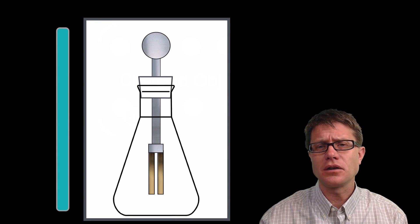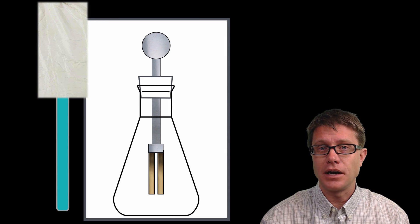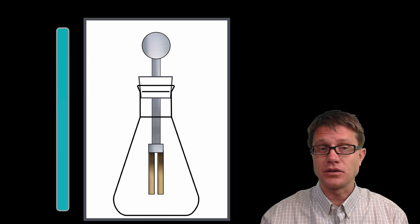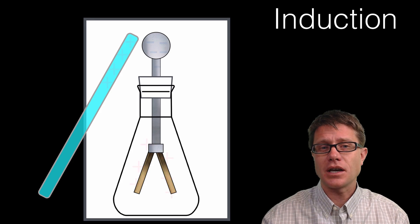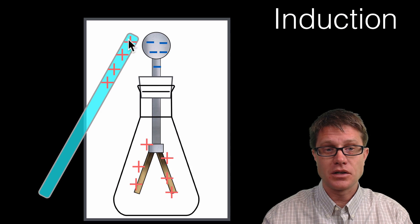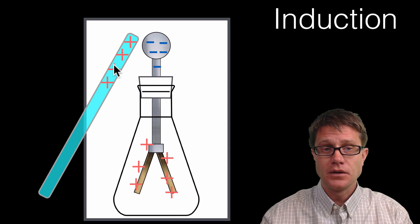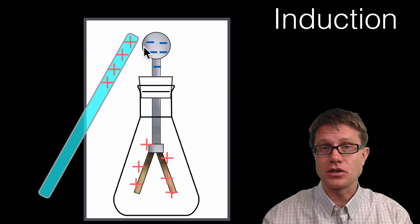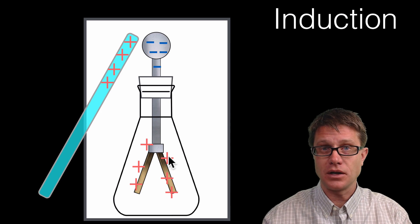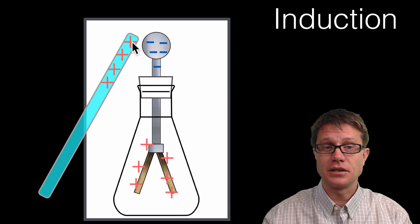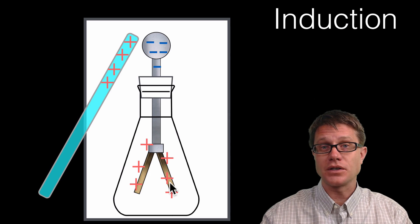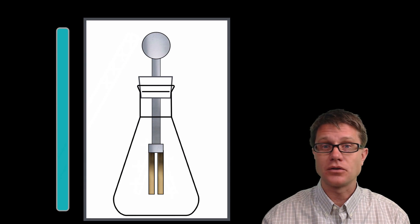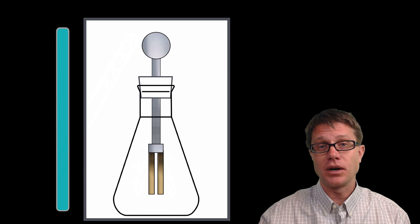Let's go back to the electroscope and understand what is going on at the charge level. I charged a glass rod by pulling electrons away, giving it a positive charge. As I move it close to the electroscope the metal leaves at the bottom move apart. The electrons in the entire conductor are attracted upward toward the positive rod, leaving behind positive charges at the bottom. Those positive charges on each leaf push against each other, causing the leaves to move apart. If I move the rod away, the electrons dissipate and we have a neutral electroscope again.